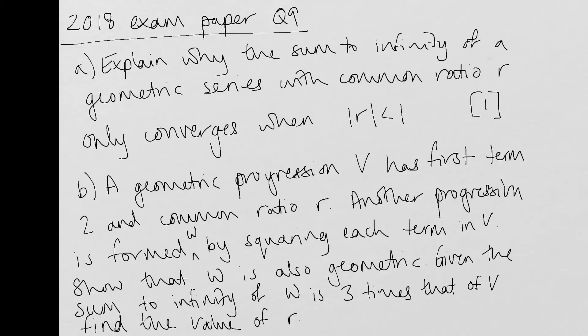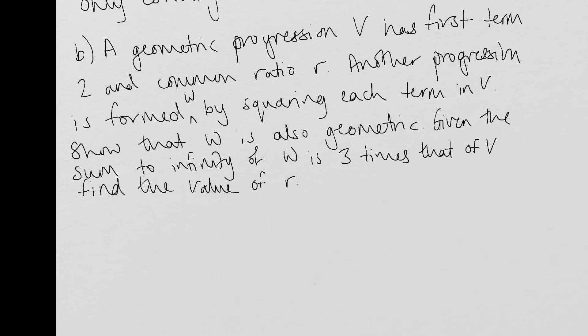So here is the second example that I would like to look at in this lesson. For the first part of the question, it's worth one mark. I'm just going to email you the mark scheme for that because it's just sort of a standard response that they're looking for. So I'm going to focus on this second part. So a geometric progression, V, has first term two and common ratio R.